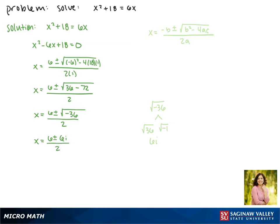Breaking these up into separate fractions, we get x equals 6 over 2 plus or minus 6i over 2. And simplifying this gives us our complex solutions, 3 plus or minus 3i.